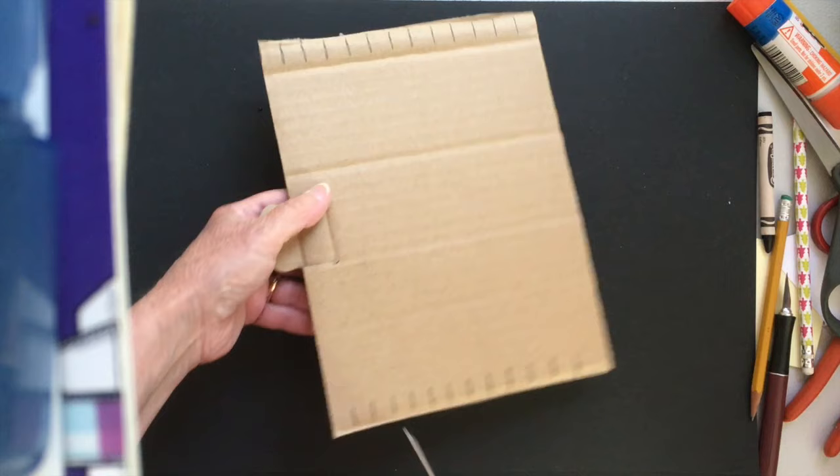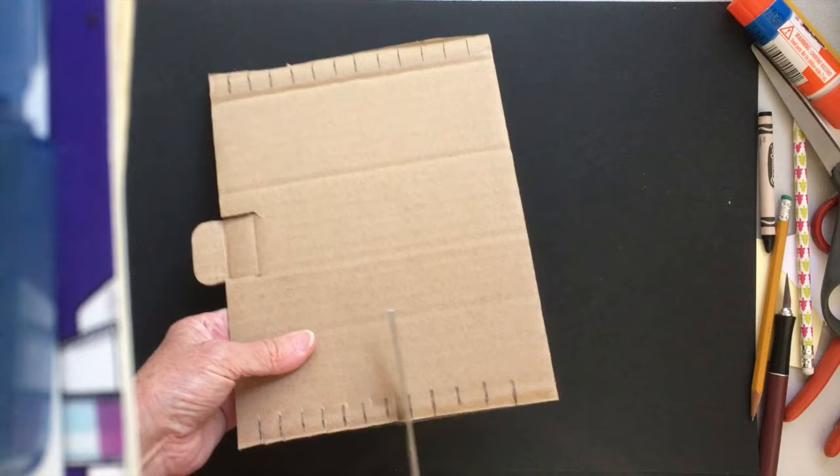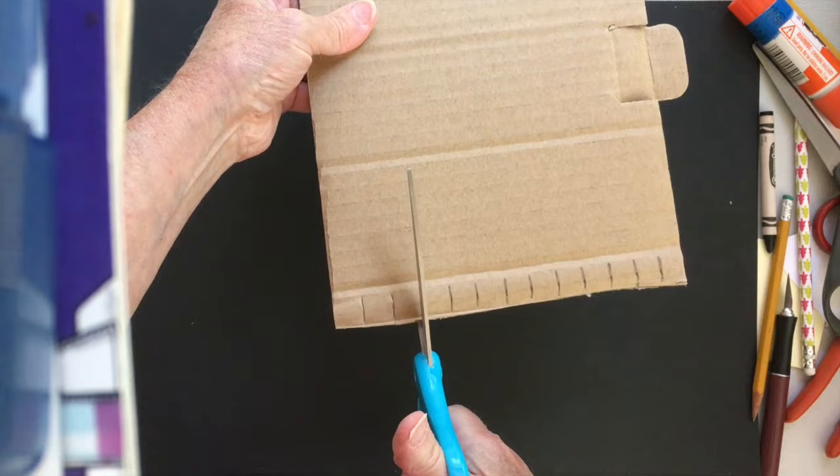Eleven or twelve lines across each side is good. I just want to cut a little bit into the cardboard. You'll notice if you're looking carefully that I started to get off of my marks. But it's not really that important as long as you have the same number of marks on each side.